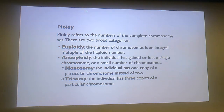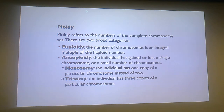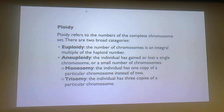We talked a little bit about ploidy — that's the number of complete chromosome sets, and there are two categories. Euploidy is where the number of chromosomes is an integral multiple of the haploid number. We've got our gametes, which are haploid — in humans, each gamete has 23 chromosomes. Our adult forms are diploid, so those all have 46 chromosomes, in a perfect world. You get 23 out of a gamete, 46 in the adult.